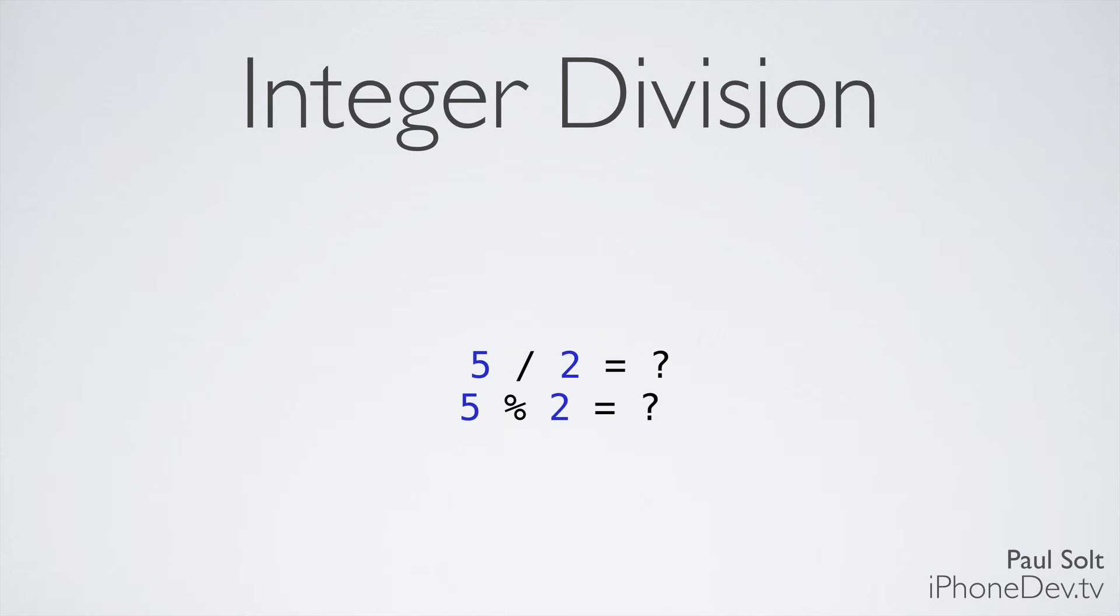Now to deal with this type of issue, we have the modulus operator, which is the percent symbol. This is used to give you the remainder. And if you do 5 modulus 2, you'll get 1. Now you can double check that this works because you can say 2 * 2 is 4, and then you add the remainder 1, and that gives you 5.